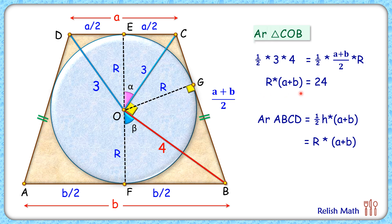But R times A plus B, that we have already calculated as 24. And thus area of trapezium is 24 centimeter square. And that's our answer. I hope you enjoyed the solution. I will see you in next video.